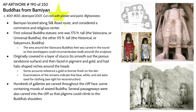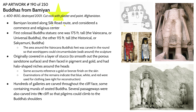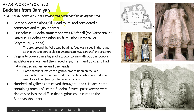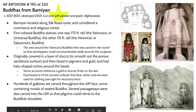Our first artwork within this section is the Buddhas of Bamiyan. Bamiyan is located in what is now Afghanistan along the Silk Route. It was a commerce and religious center for hundreds of years, with evidence suggesting that Buddhism was in this region even before the introduction of Islam. These were among the first colossal Buddha statues. The largest represented the Vairochana or universal Buddha and stood around 175 feet tall, while the other, around 115 feet tall, represented the historical or Sakyamuni Buddha.